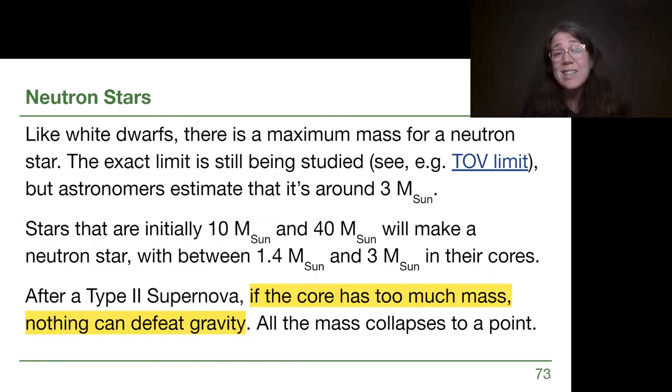Now like white dwarfs, there is a maximum mass. The white dwarf maximum mass was the Chandrasekhar limit. The neutron star mass limit is still under debate and being studied. Astronomers estimate that it's around three solar masses. The details of the TOV limit are outside the scope of this course. But what we care about is that stars that are between about 10 solar masses and 40 solar masses to begin with will leave behind a core that is almost certainly going to make a neutron star. And that neutron star will have a mass between 1.4 solar masses, because below that would be a white dwarf, and about three solar masses. The reason for that upper limit is because at some point gravity can win.